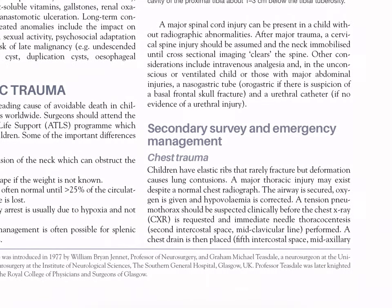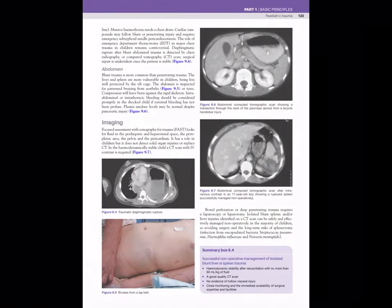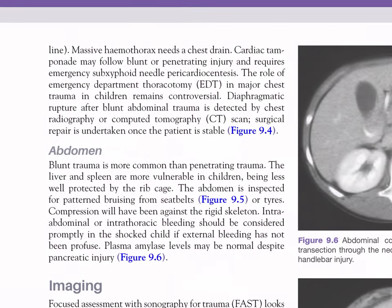Secondary survey and emergency management — Chest trauma. Children have elastic ribs that rarely fracture, but deformation causes lung contusion. A major thoracic injury may exist despite a normal chest radiograph. The airway is secured, oxygen given, and hypovolaemia corrected. Tension pneumothorax should be suspected clinically before the chest X-ray is requested, and immediate needle thoracocentesis — second intercostal space, mid-clavicular line — performed. A chest drain is then placed — fifth intercostal space, mid-axillary line. Massive haemothorax needs a chest drain. Cardiac tamponade may follow blunt or penetrating injury and requires emergency sub-xiphoid needle pericardiocentesis. Diaphragmatic rupture after blunt abdominal trauma is detected by chest radiography or CT scan; surgical repair is undertaken once the patient is stable.